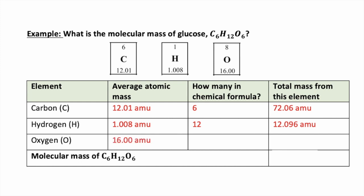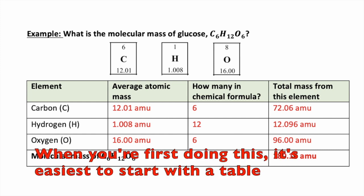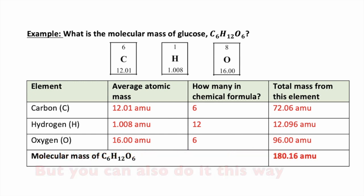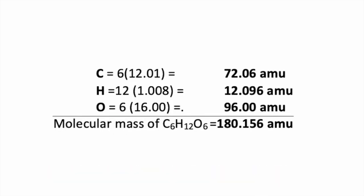We'll do the same thing with oxygen. The average atomic mass is 16.00 AMU. We have six oxygen atoms in our chemical formula, and multiplying gives 96.00 AMU. Adding up the total masses for all elements, the molecular mass of C6H12O6 is 180.16 atomic mass units, rounded to the nearest hundredths place. You can also set it up in a slightly different format — it's the same process, just a different layout.